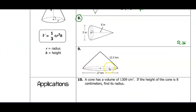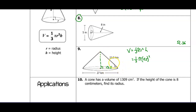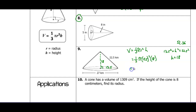For number nine, the diameter is 27, so the radius is 13.5. The height of the cone drops perpendicular to the circle, creating a right triangle cross-section. Using the Pythagorean theorem: 13.5 squared plus height squared equals 22.5 squared. Solving gives a height of 18. Plugging 13.5 and 18 into the cone formula one-third times pi times 13.5 squared times 18, the volume comes out to 3,435.33 cubic kilometers.